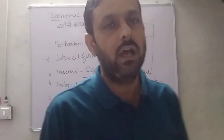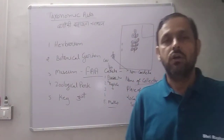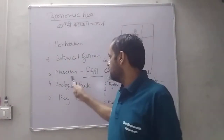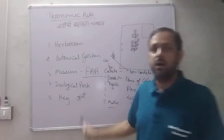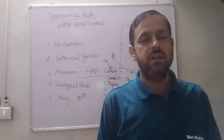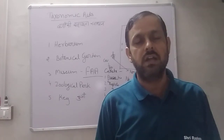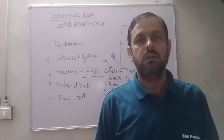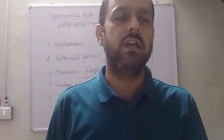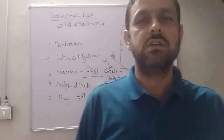So all these taxonomic aids — herbarium, botanical garden, museum, zoological park, and key — help us in identification, nomenclature, and classification, and together that is called taxonomy. That is all for today. Thank you. We will discuss a new topic in the next class.